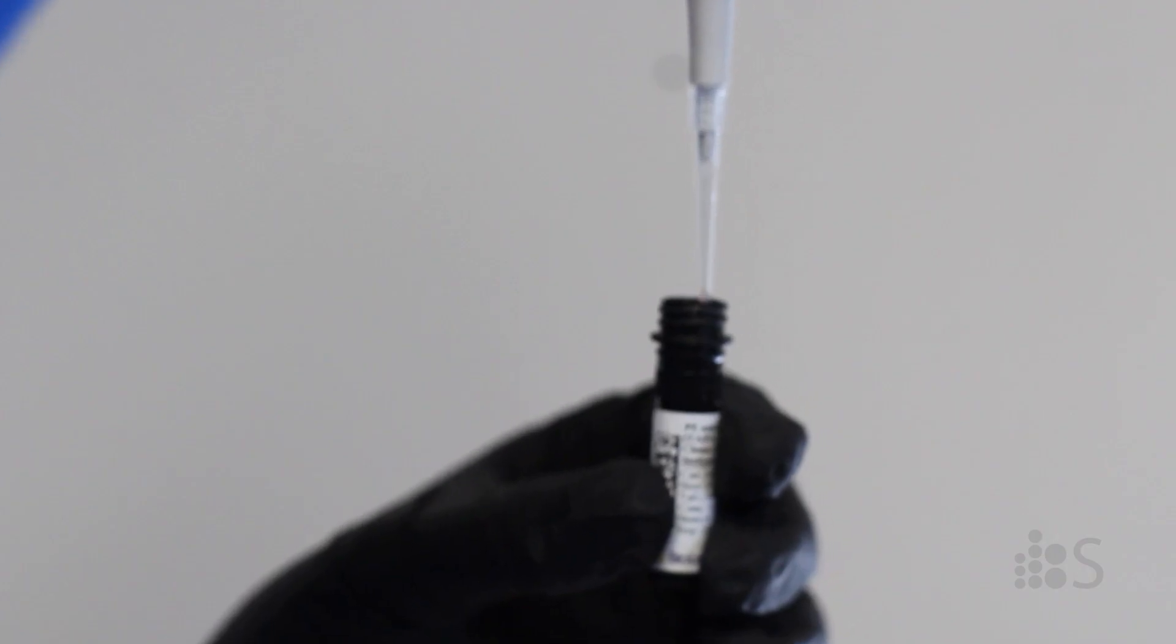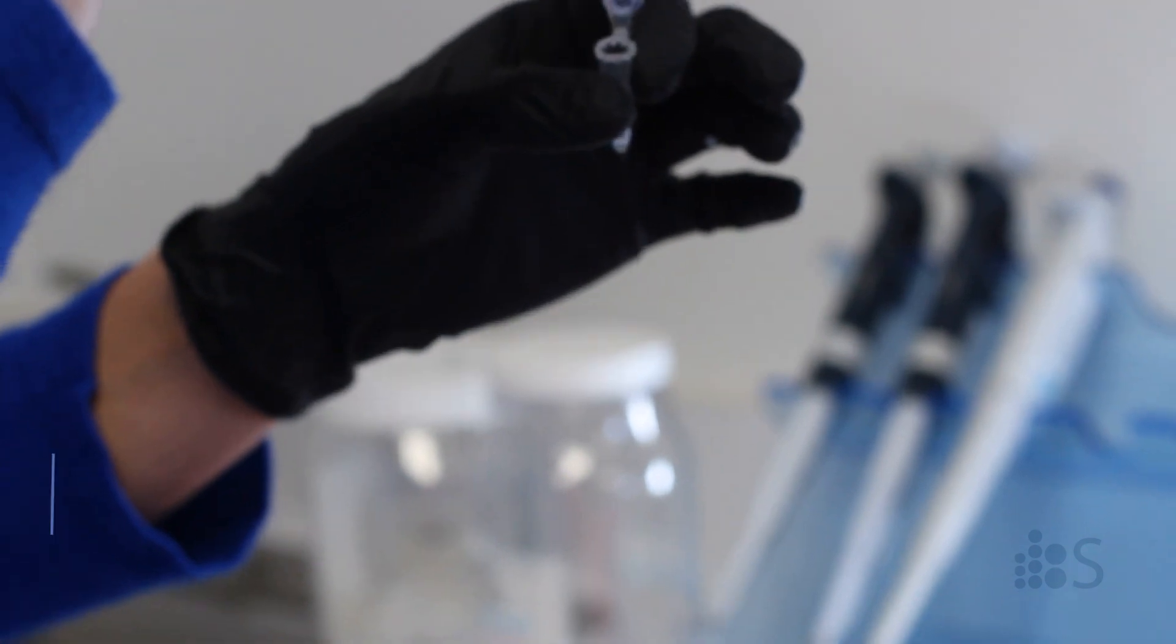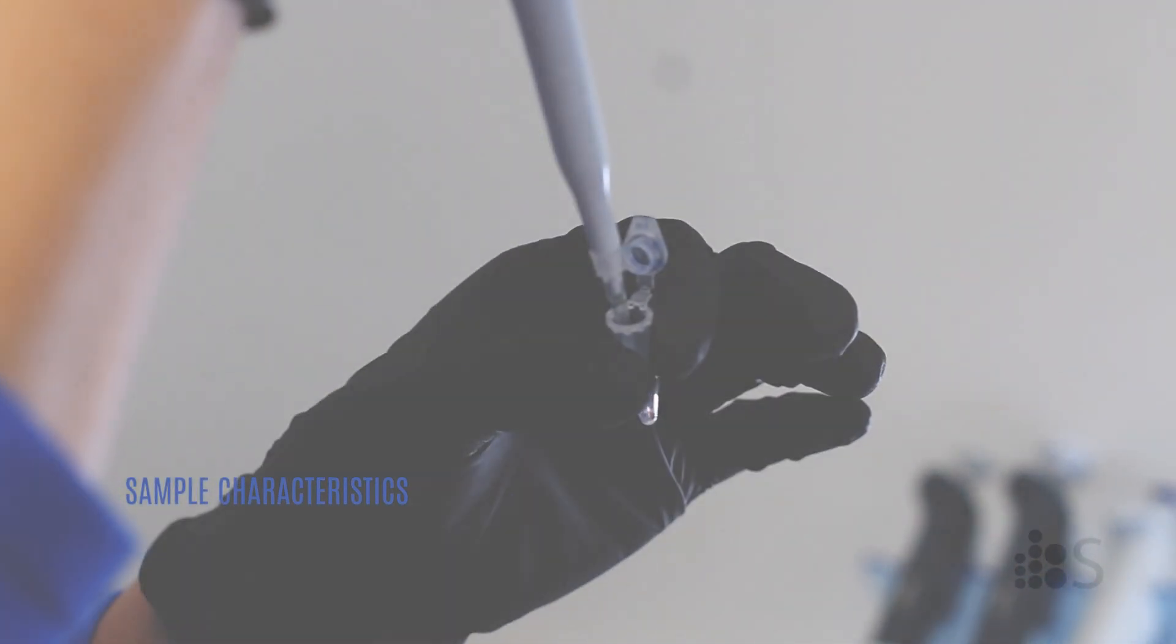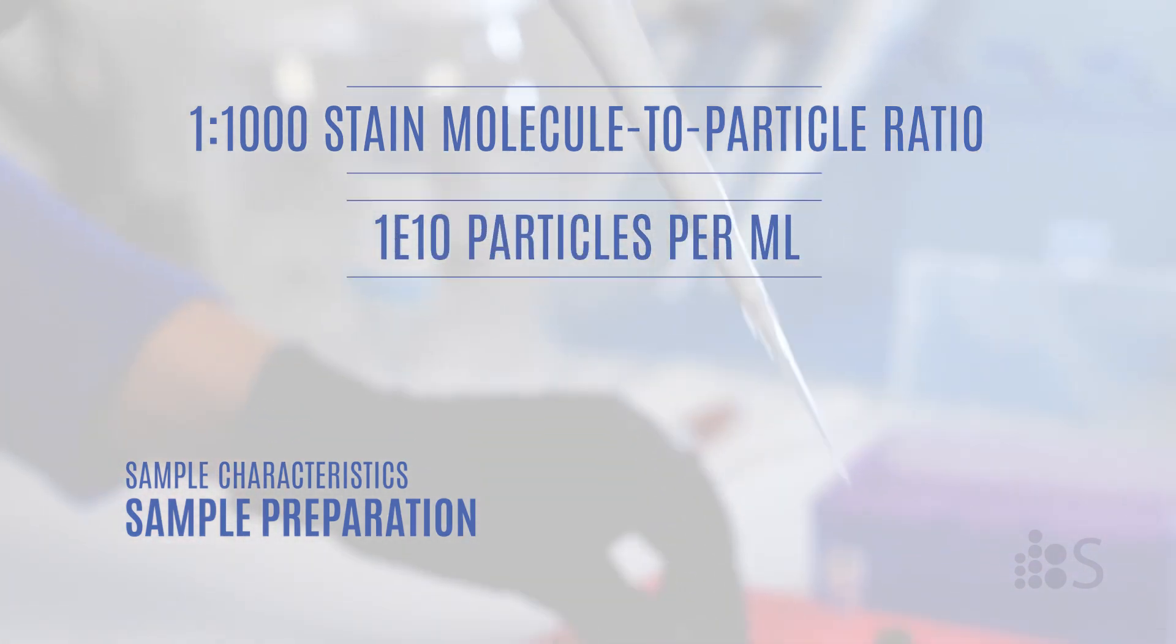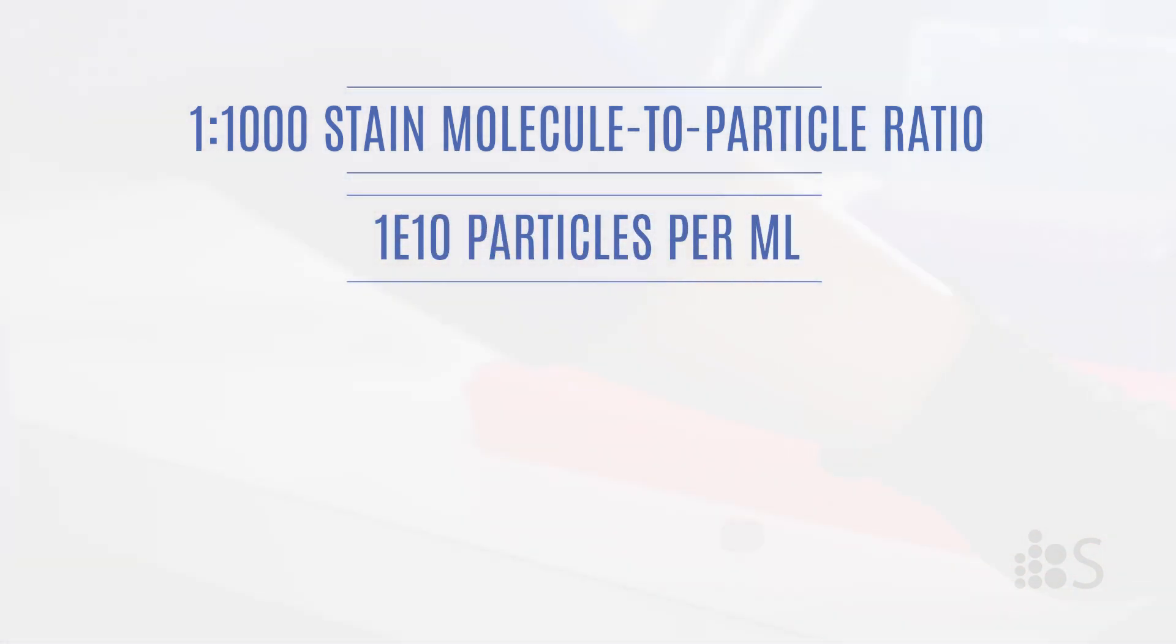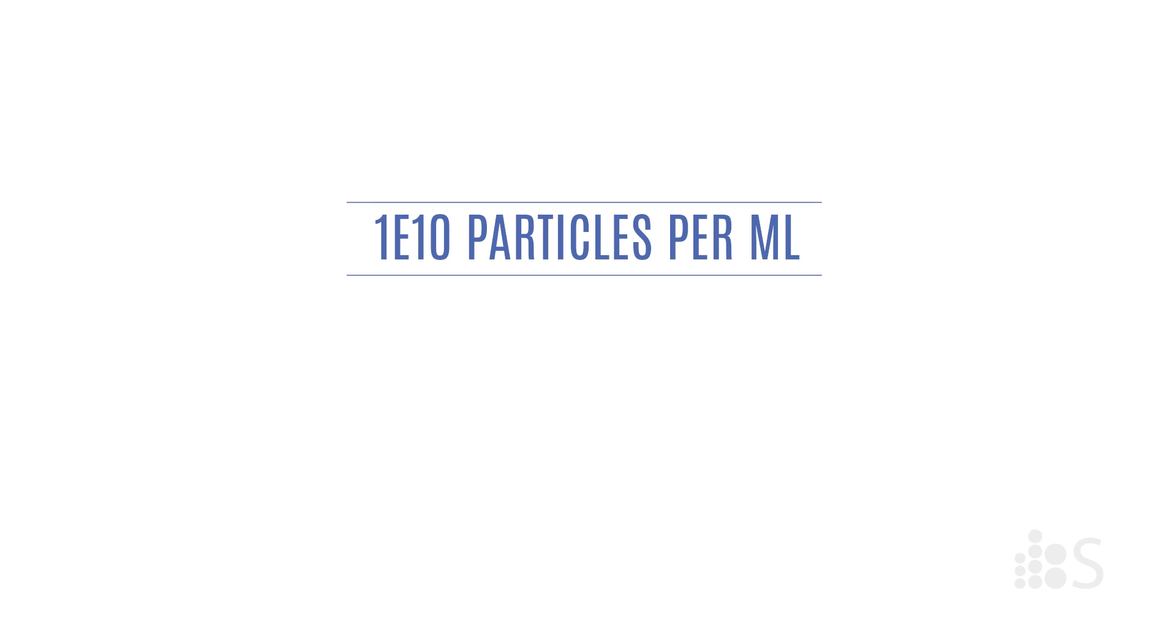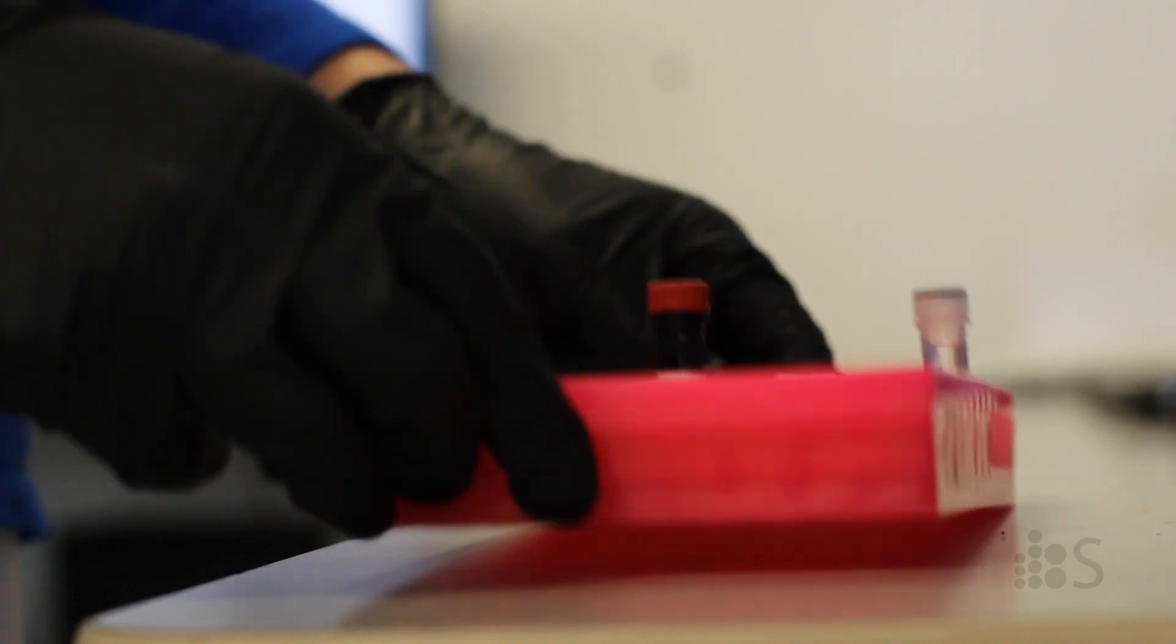To prepare the sample for measurement, she will add the stain to a small aliquot of the sample, shooting for a stain molecule-to-particle ratio of about 1000, and a particle concentration around 1 times 10 to the 10 particles per milliliter. Then, we let the stain and sample incubate in the dark for 30 minutes at room temperature.